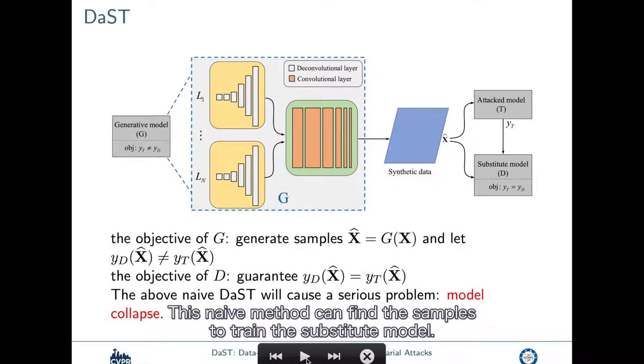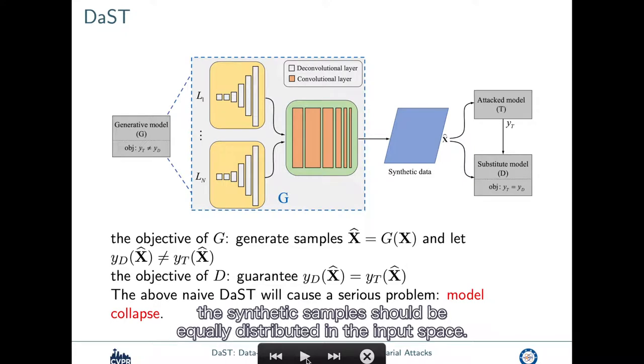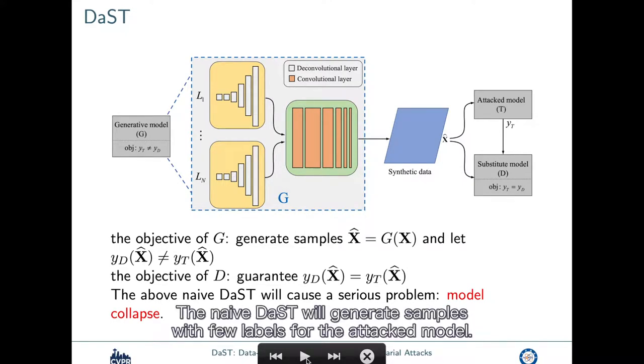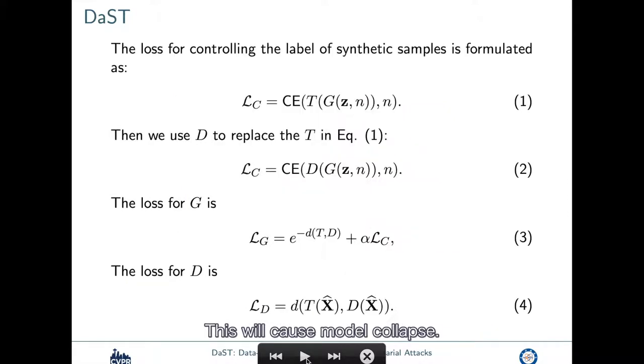This naive method can find the samples to train the subsidial model. However, for the performance, the synthetic samples should be equally distributed in the input space. The naive test will generate samples with few labels for the attacked model, so that the subsidial model cannot imitate the attacked model comprehensively. This will cause the model collapse.